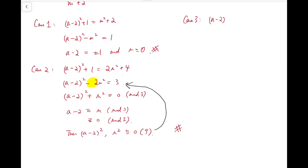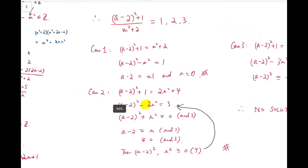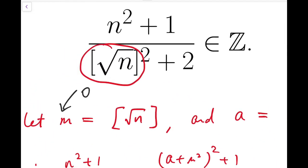Case 3: (a minus 2) whole squared plus 1 equals 3m squared plus 6. This is even easier, because taking mod 3 on both sides, the left-hand side becomes (a minus 2) squared only, while the right-hand side becomes minus 1 mod 3, which is not possible — even more obvious. So to conclude, we actually have no solution, which means n squared plus 1 over the square of the floor function of square root of n plus 2 can never be an integer.